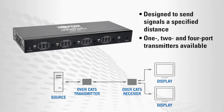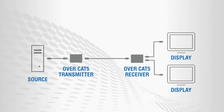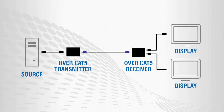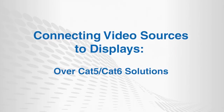Choose a matrix transmitter for installations with multiple video sources. Use Direct Connect AV cables to connect your video source and local display to a transmitter. Use Cat 5, Cat 5e or Cat 6 cable to connect the transmitter to a receiver, repeater or receiver splitter. To complete the installation, use Direct Connect cables to connect the receiver to each remote display. Thank you for your interest in TripLite products.